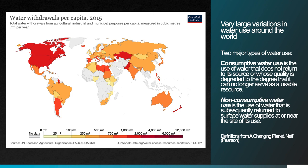As is the case with almost everything in environmental science, global averages don't tell you a whole lot about how the world actually works. If we look at water withdrawals per capita for 2015 data, we see a lot of variation across the world, with the US in fact being one of the higher per capita users of water. Interestingly, the patterns are not the same as you would typically see for something like energy or other metrics of consumption.